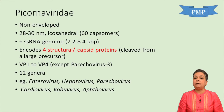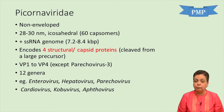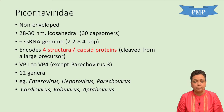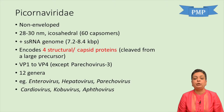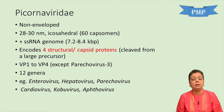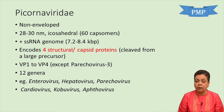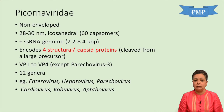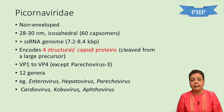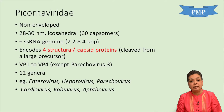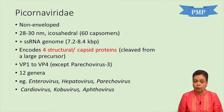This RNA genome encodes four structural or capsid proteins which are generated from a single large precursor protein. These structural proteins are VP1 to VP4, except parechovirus, which contains only three structural proteins.